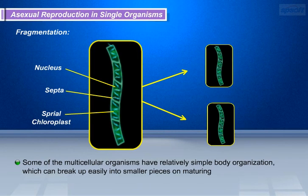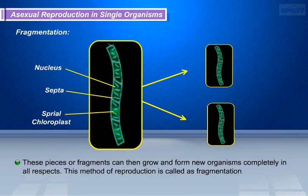Let us see the process of fragmentation. Some of the multicellular organisms have relatively simple body organization, which can break up easily into smaller pieces upon maturing. These pieces or fragments can then grow and form new organisms completely in all respects. This method of reproduction is called fragmentation.